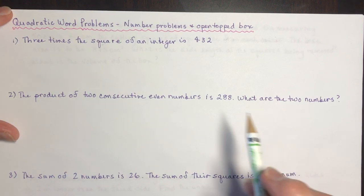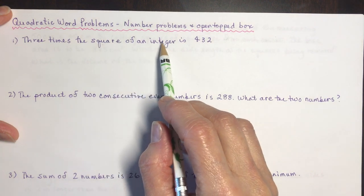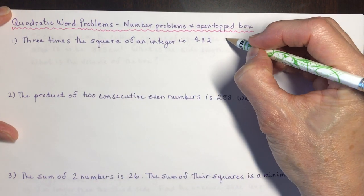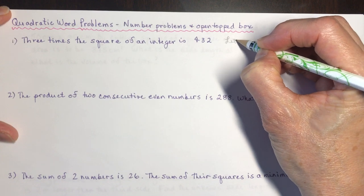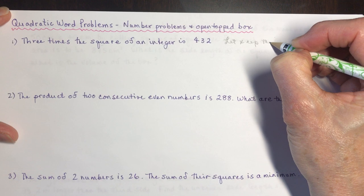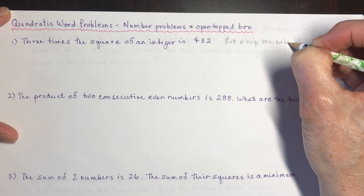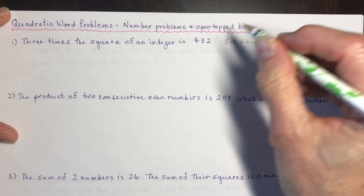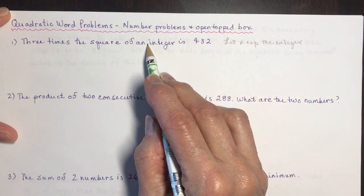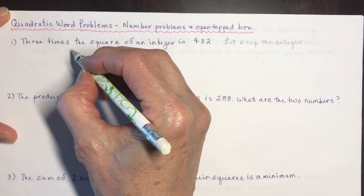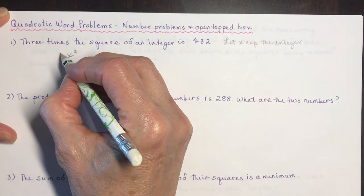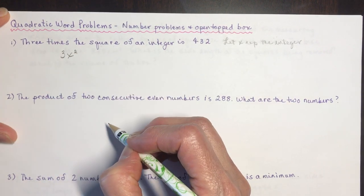Problem one: three times the square of an integer is 432. These are word problems, so you have to have a let statement. Let x represent the integer. Three times the square of the integer means x squared, and three times it means 3x squared.